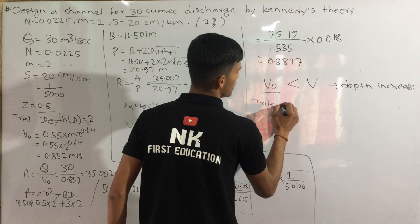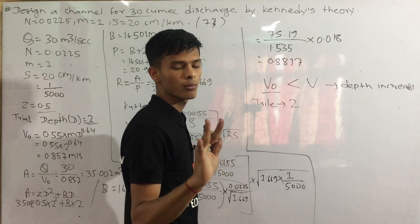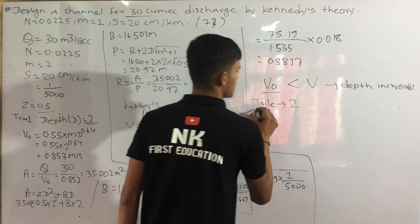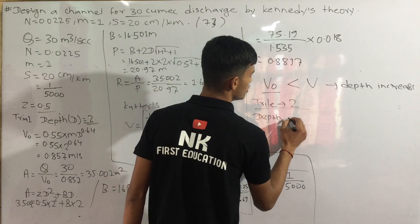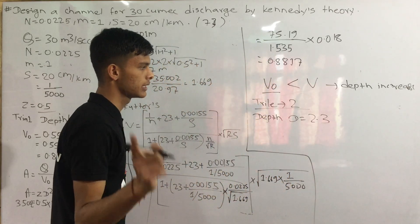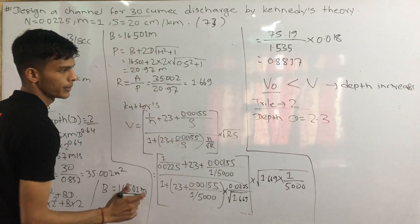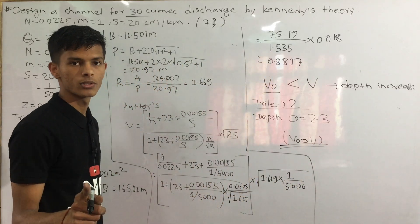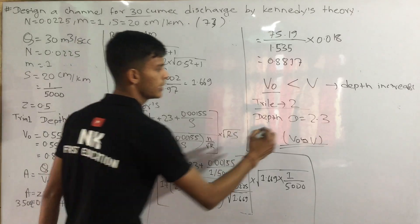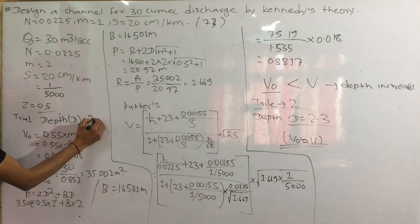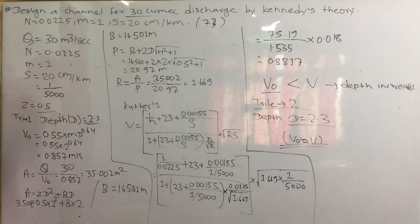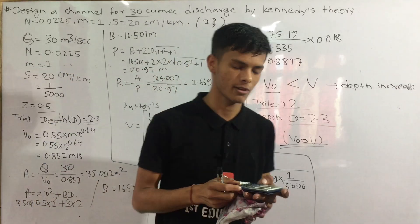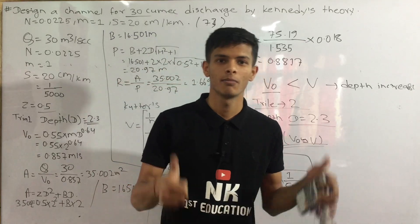Trial Second. So I should do 3 inches. Trial Second Depth. Now B is equal to B — approximately — I will be able to do the same process. Now I will be able to do the same process. Please save the text and give me love.